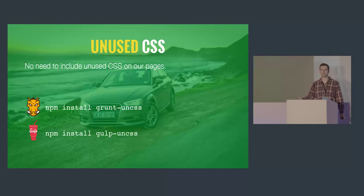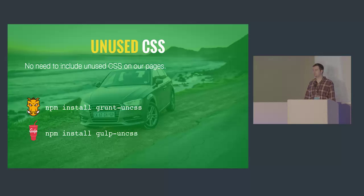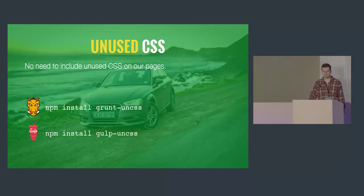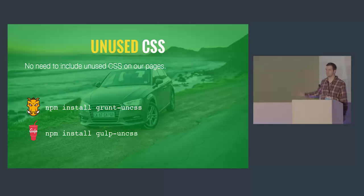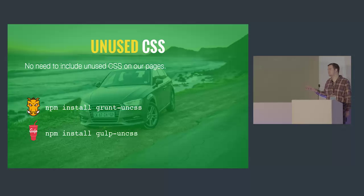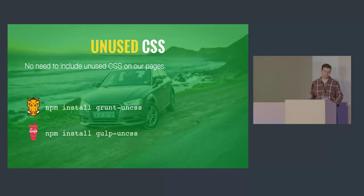Another thing we can do is remove unused CSS. If you're using a UI framework like Twitter Bootstrap, Foundation, or Skeleton, chances are you're only using 10 to 20 percent of the CSS included — so why send it all to the user? We can use grunt-uncss or gulp-uncss to optimize that and produce a smaller output with just the CSS we're actually using on our page. This also helps if you have multiple developers and some unused code gets left behind.